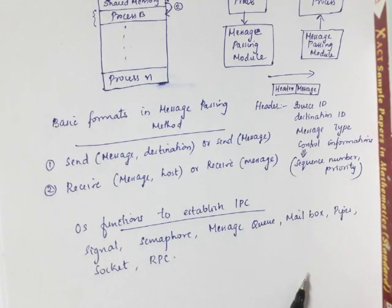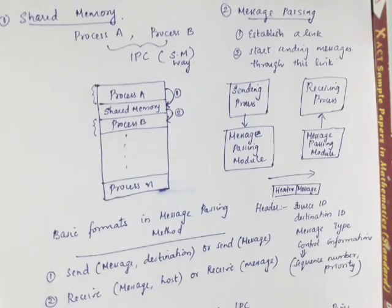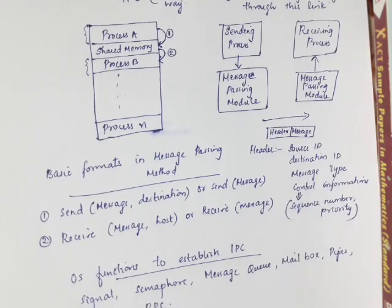Inter-process communication is the main concept you have to know. Inter-process communication is a mechanism which allows different processes — process 1, process 2, and so on — to communicate with each other and synchronize their actions. It can be done via shared memory or message passing.